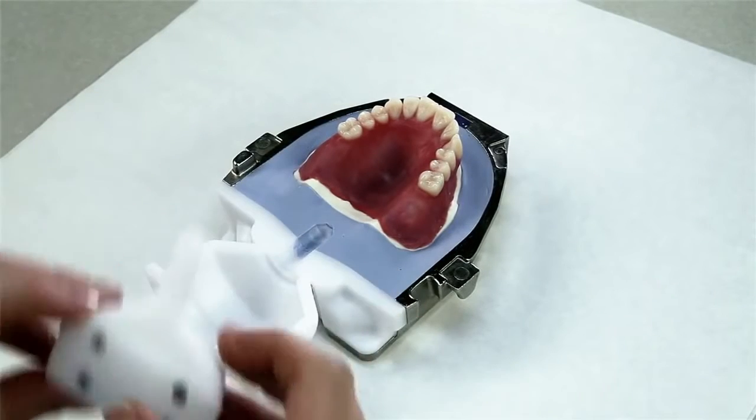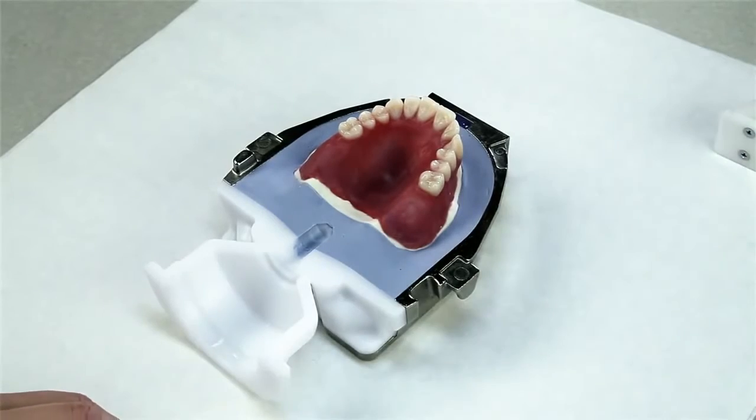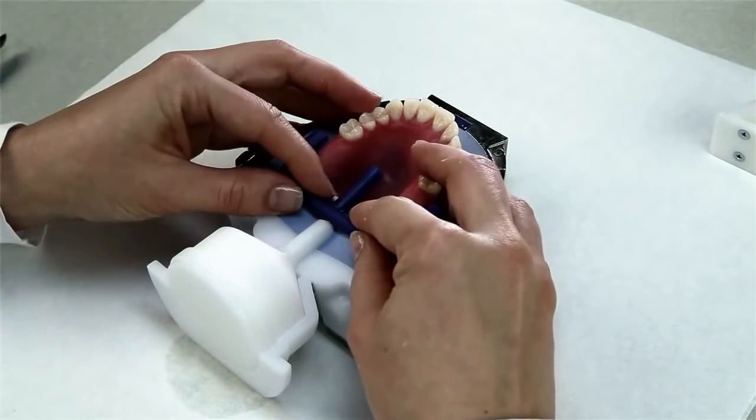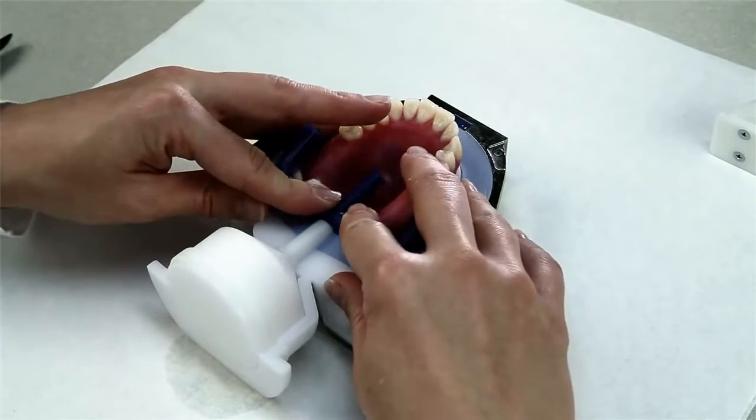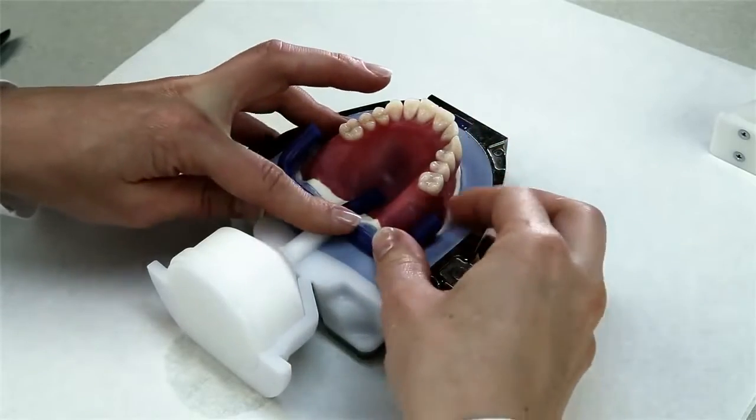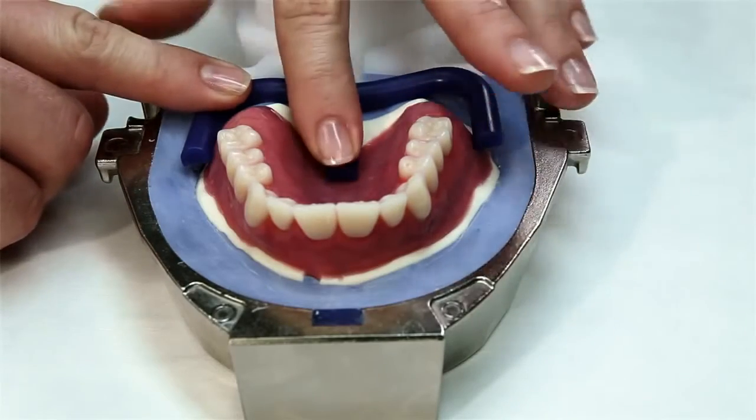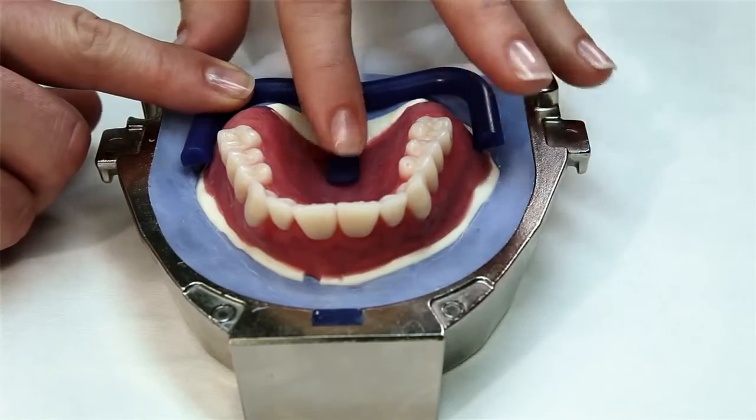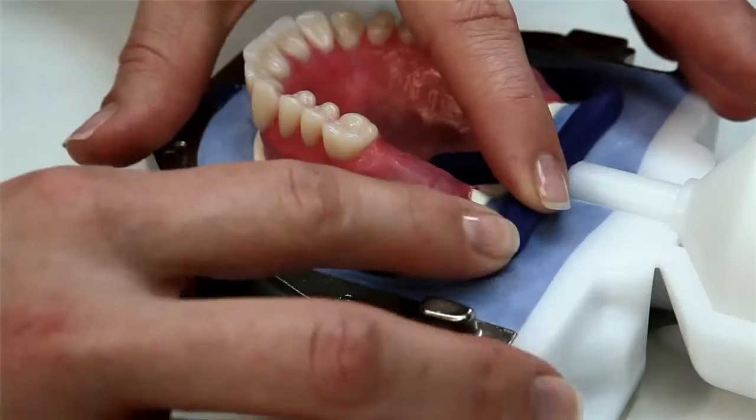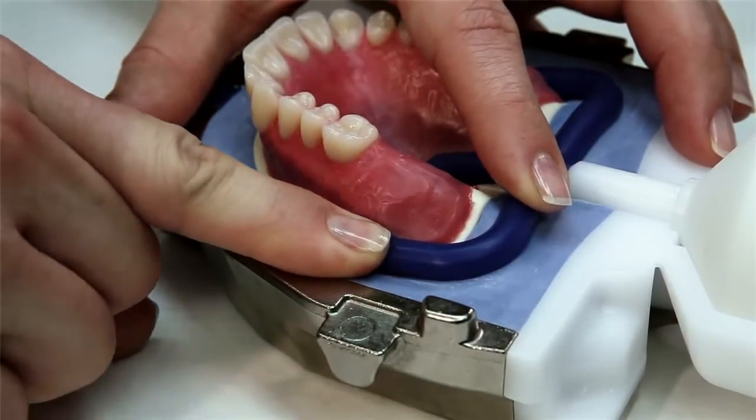Once the stone has completely set, replace the excess former half with the excess former full. The injection wax component may now be pressed over the conical tip of the excess former and to the stone surface. Place the sprue by pressing it against the center of the palatal roof and vestibular to both tubers of the contouring. Make sure that the sprue is well secured in all areas.